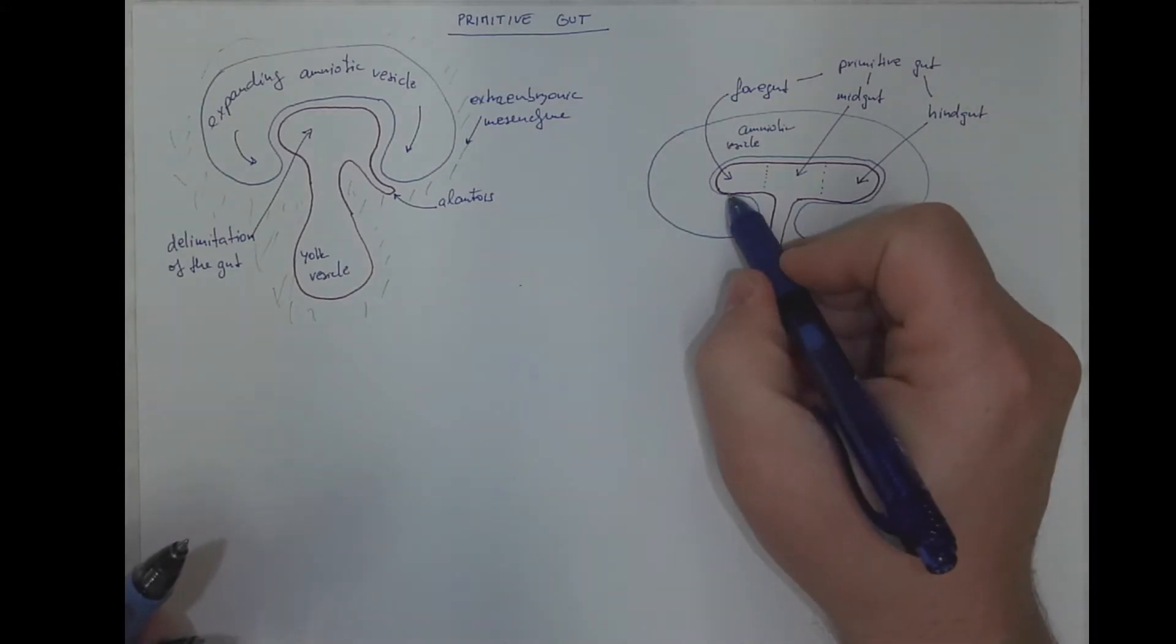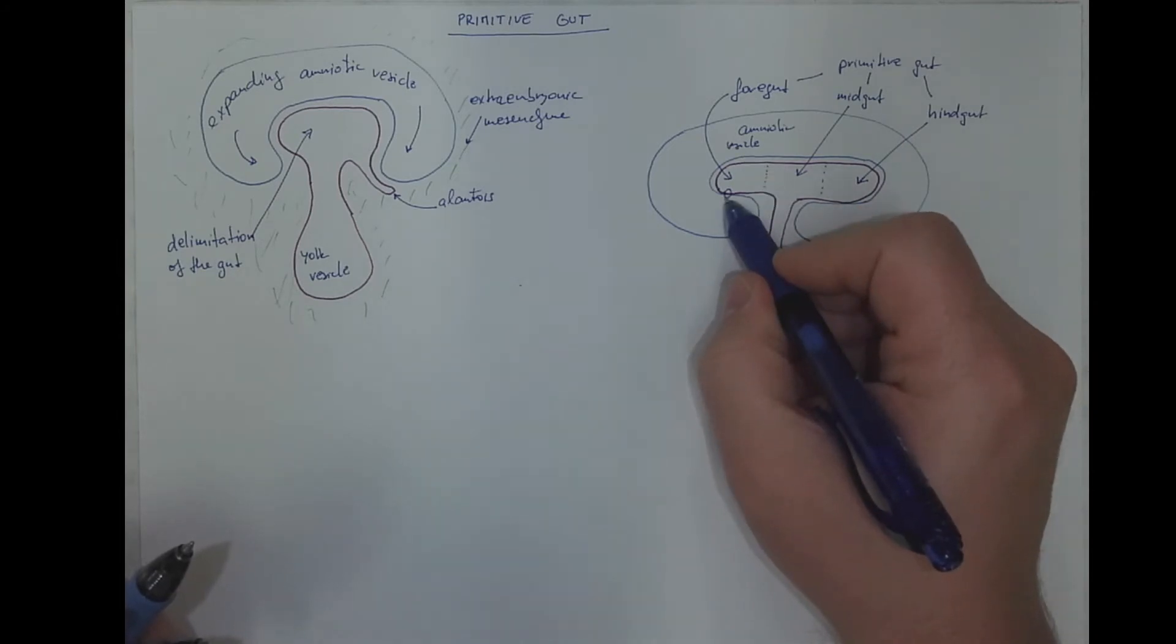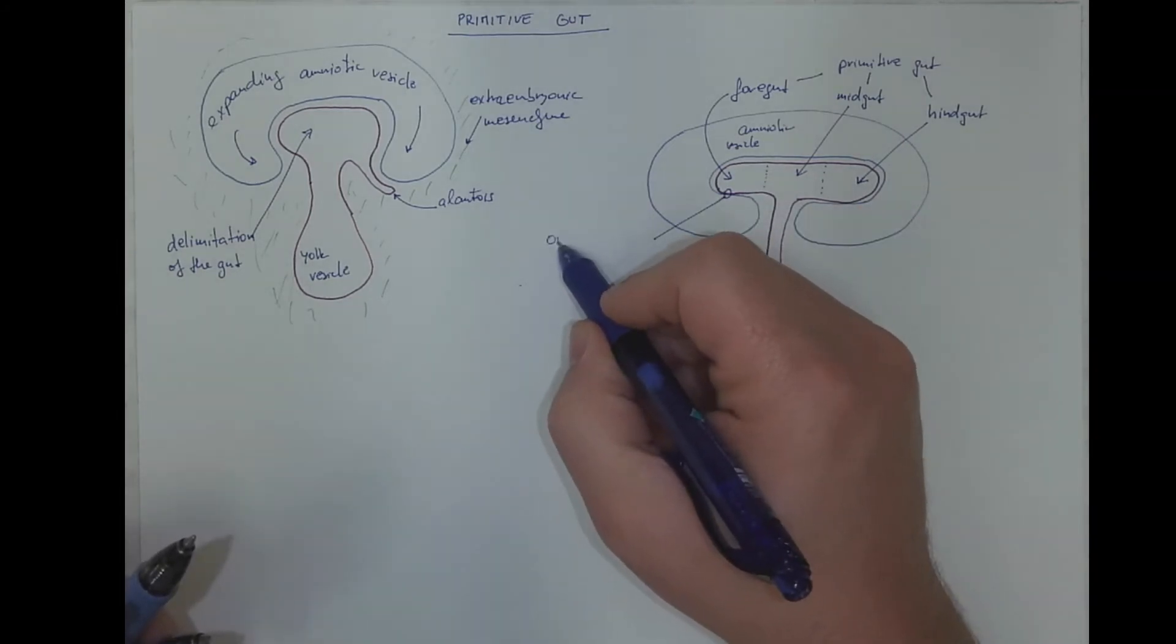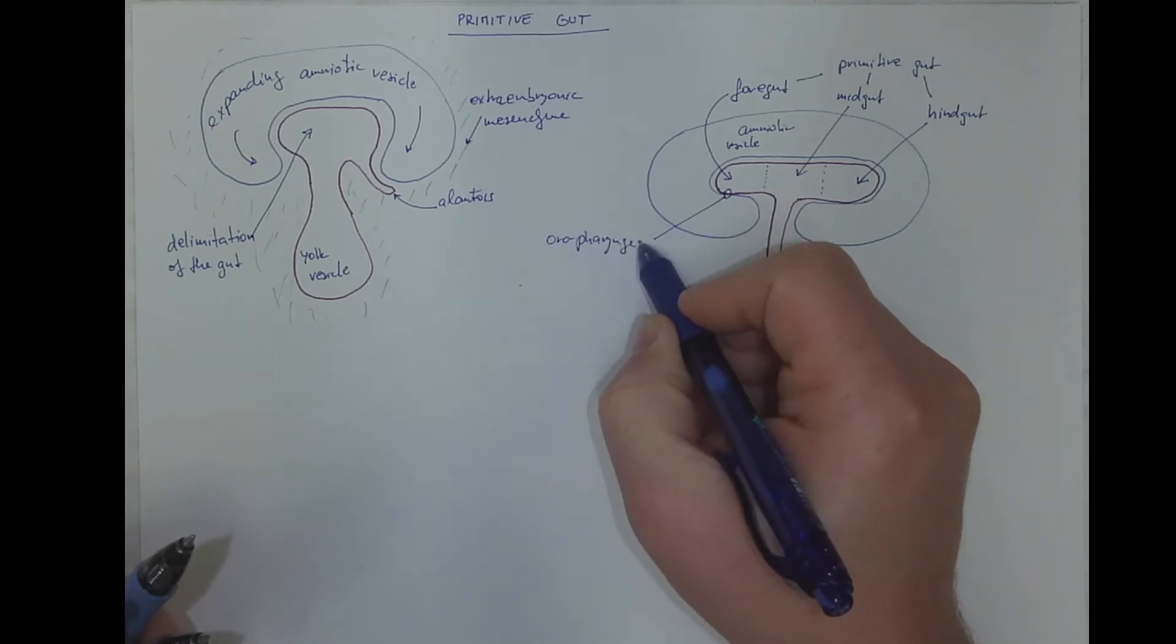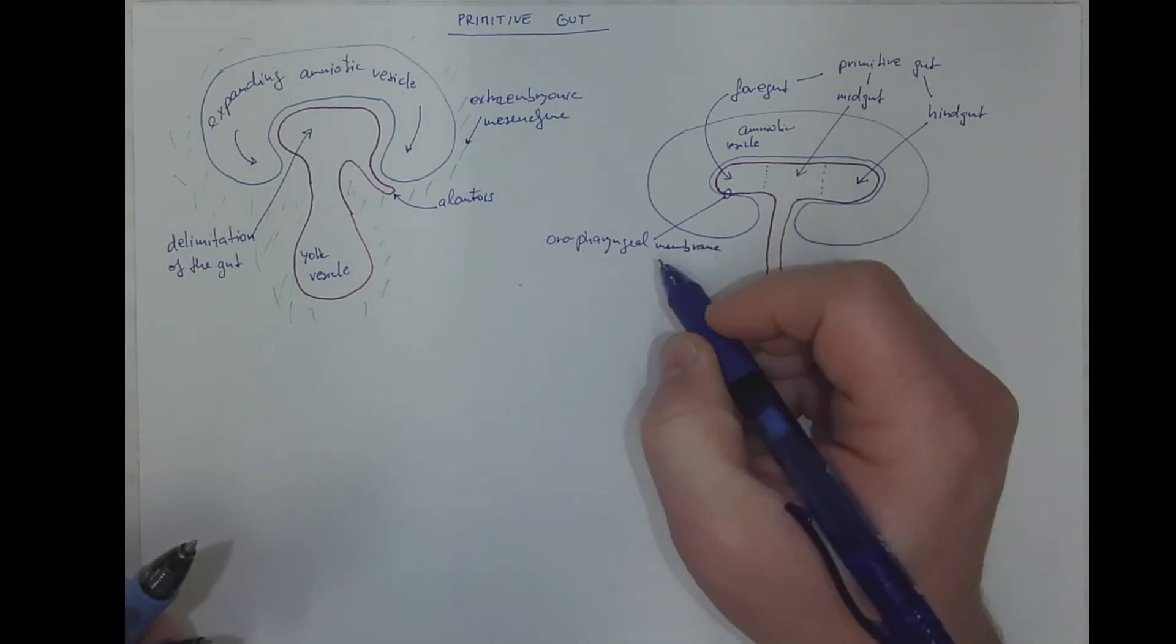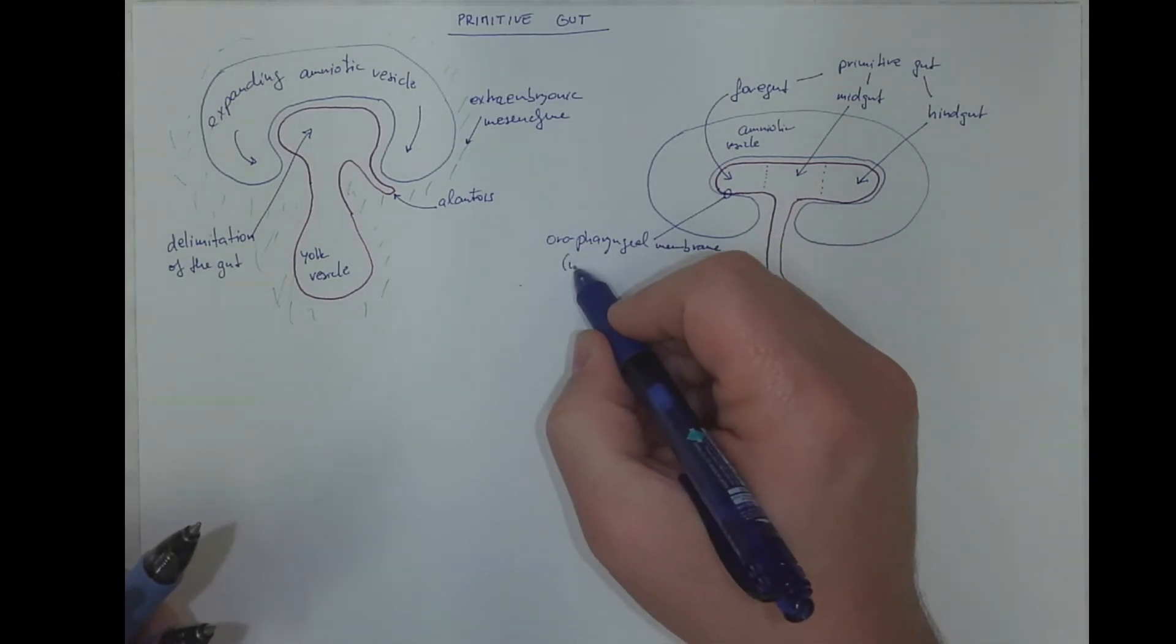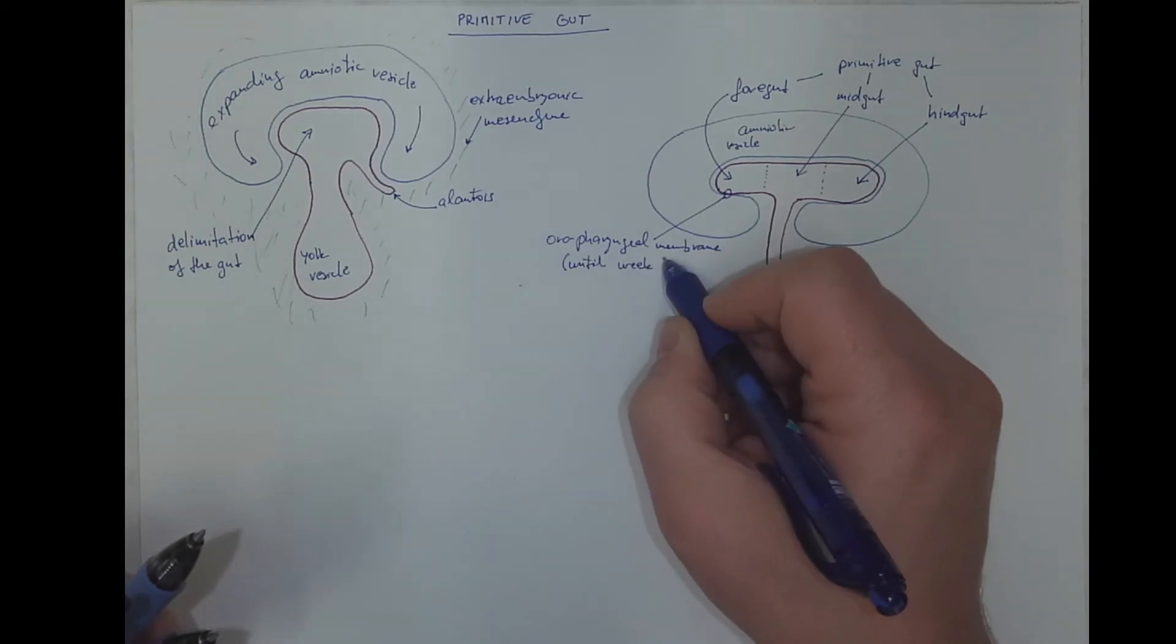The two spots where the endoderm of the primitive gut is very closely touching the ectoderm of the amniotic vesicle are the oropharyngeal membrane here, which is a temporary structure persisting until the third week and until the end of the third week.